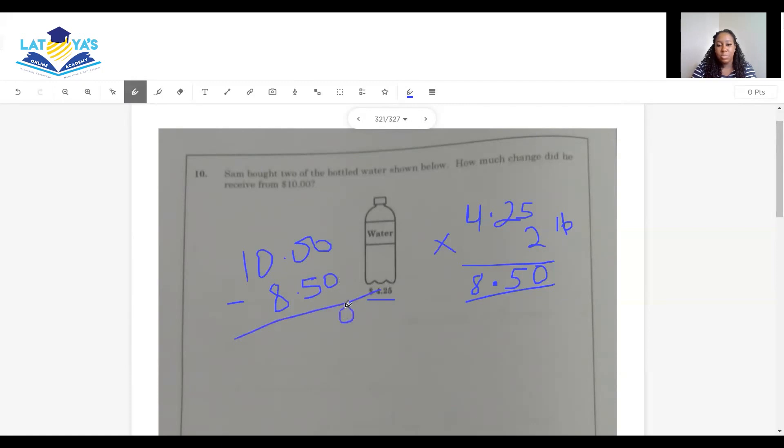So how much change did I receive? I'm calculating change, so I need to subtract. I have $10, take away $8.50. Zero take away zero is zero. Zero can't take away five. So I need to borrow. Regrouping, right? 10 take away 5 is 5. And 9 take away 8 is 1. So the change is $1.50.